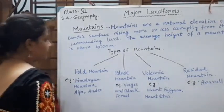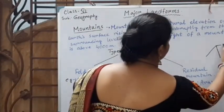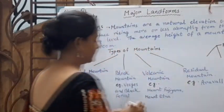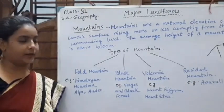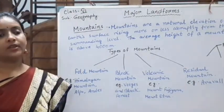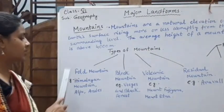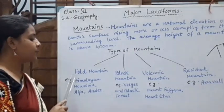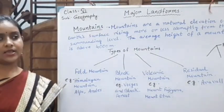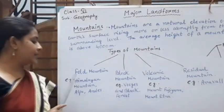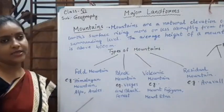The top or crest of a single mountain is called a peak. Based on their origin, mountains can be of four types. Number one is fold mountain — this type of mountain is formed due to folding in the Earth's surface. Examples are the Himalayan mountains, Alps, Andes, etc.